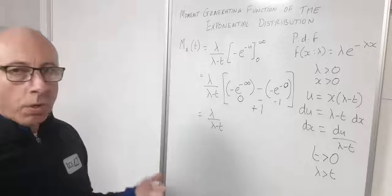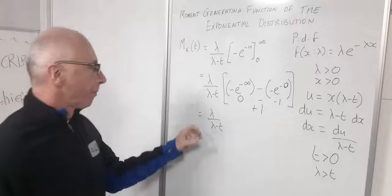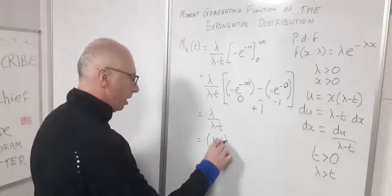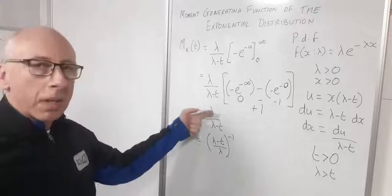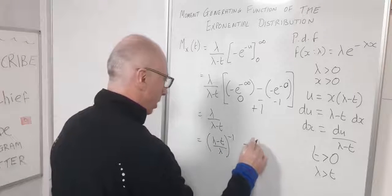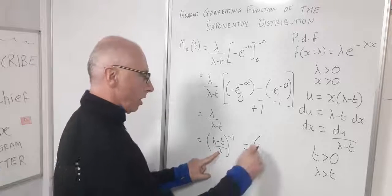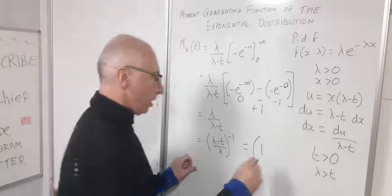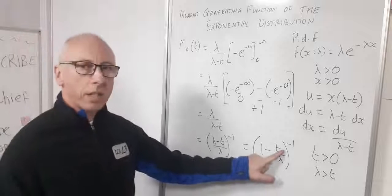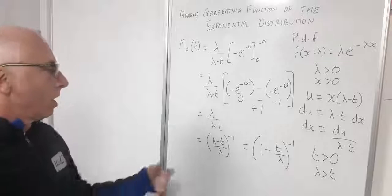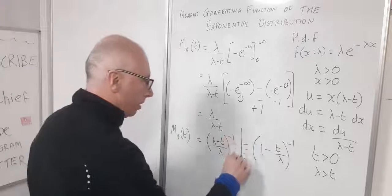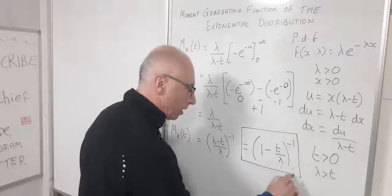That is a legitimate answer, but we can rewrite it. Flipping and raising to the power of −1: (λ − t)/λ)^(−1). Splitting the fraction gives (1 − t/λ)^(−1), given that λ > t. This is our final answer for the moment generating function: M_X(t) = (1 − t/λ)^(−1).